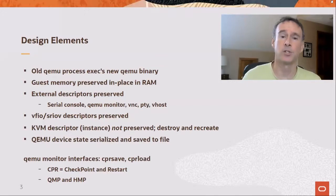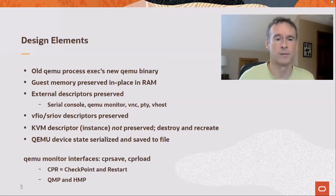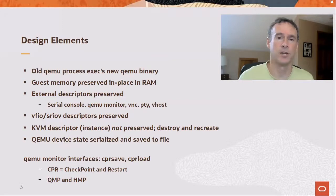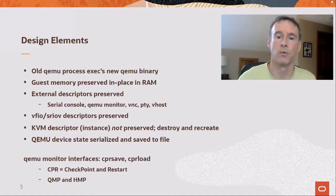VFIO device descriptors are preserved, which keeps them alive. However, the KVM descriptor is closed, which destroys the instance, cutting the cord between KVM and the VFIO kernel state. The QEMU backend device state is serialized and saved to a file. These elements are executed by two new QEMU monitor interfaces — CPR save and CPR load — where CPR stands for checkpoint and restart. QMP and HMP versions of each are provided.